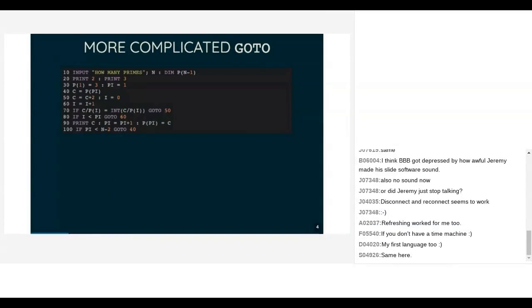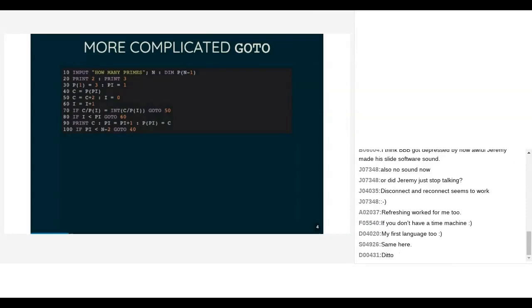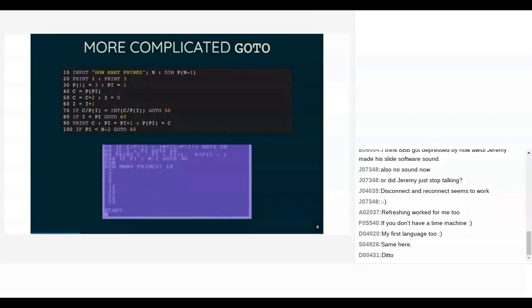This program has three GOTOs in it, so it's not actually all that complex by programming control flow standards, but I'd be willing to bet that very few people in here can actually read and understand that program without drawing diagrams or stepping through it. I certainly can't, and I'm the person who wrote it. What it does — as you can tell by the input prompt — is print out some number of primes. Let's run it printing the first 10 primes, and there you go.